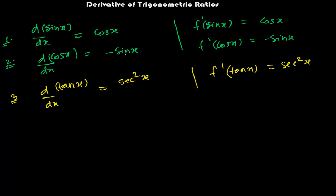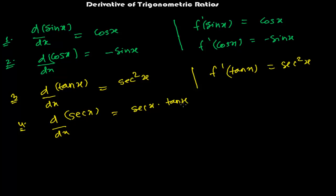Notice the pattern: the derivative of sin is cos, and the derivative of cos is −sin. Similarly, the derivative of tan is related to sec, and the derivative of sec is also related to tan. So the derivative of sec x is sec x · tan x.